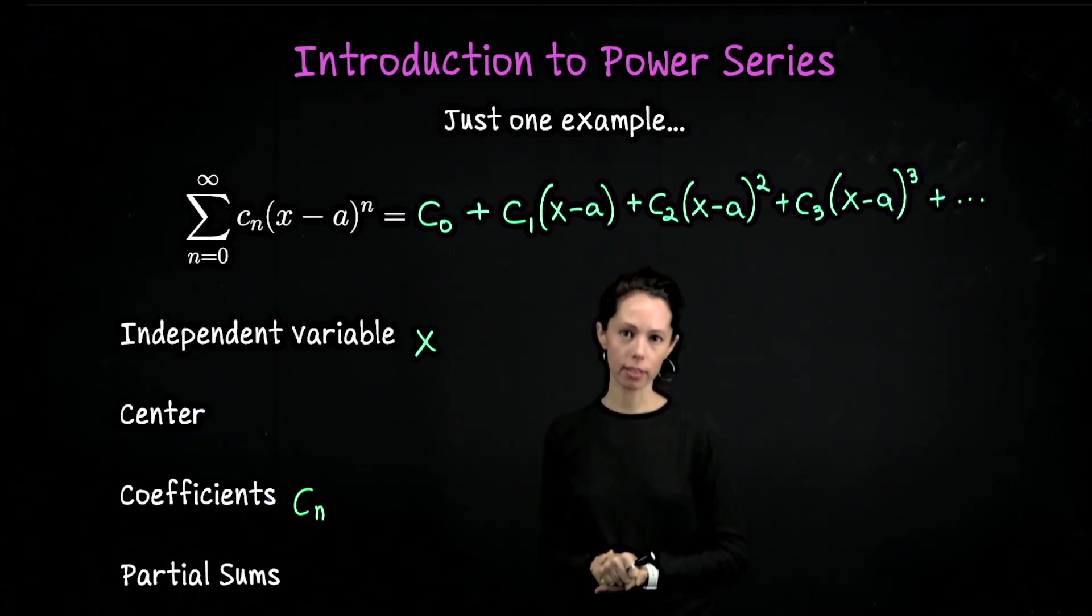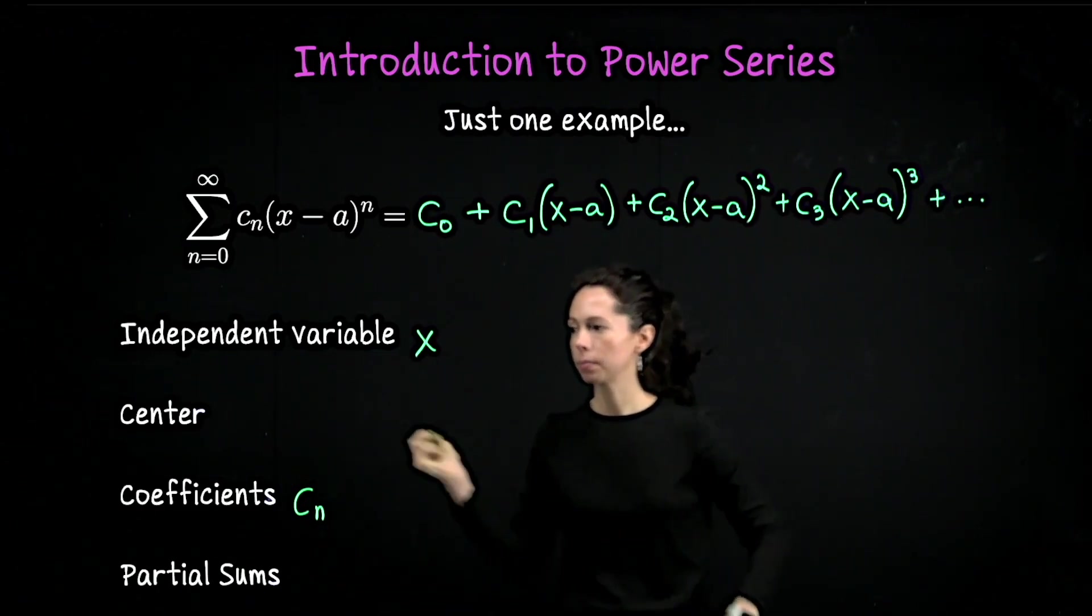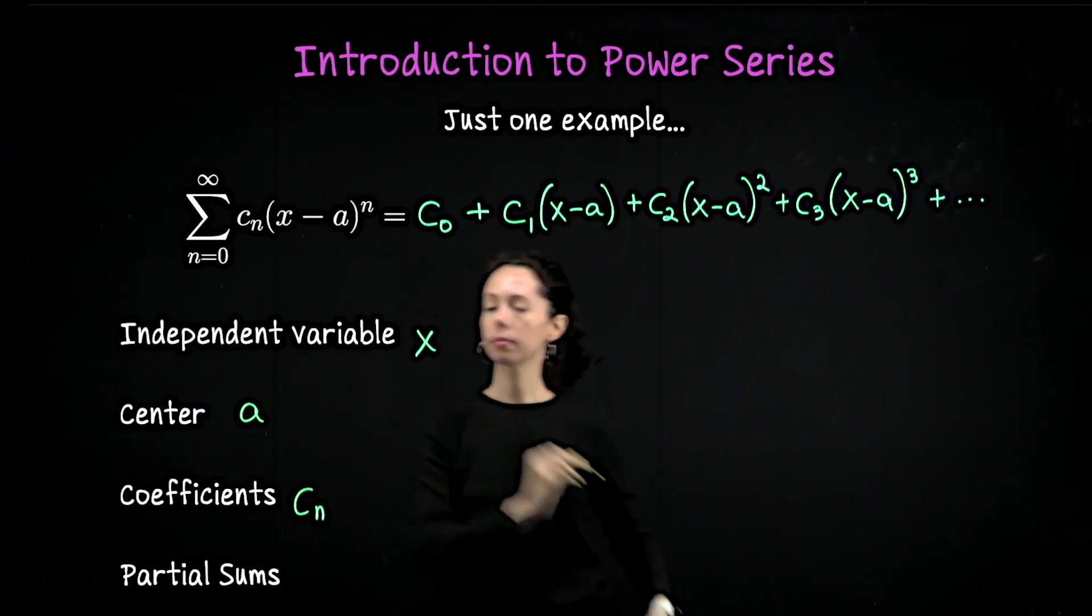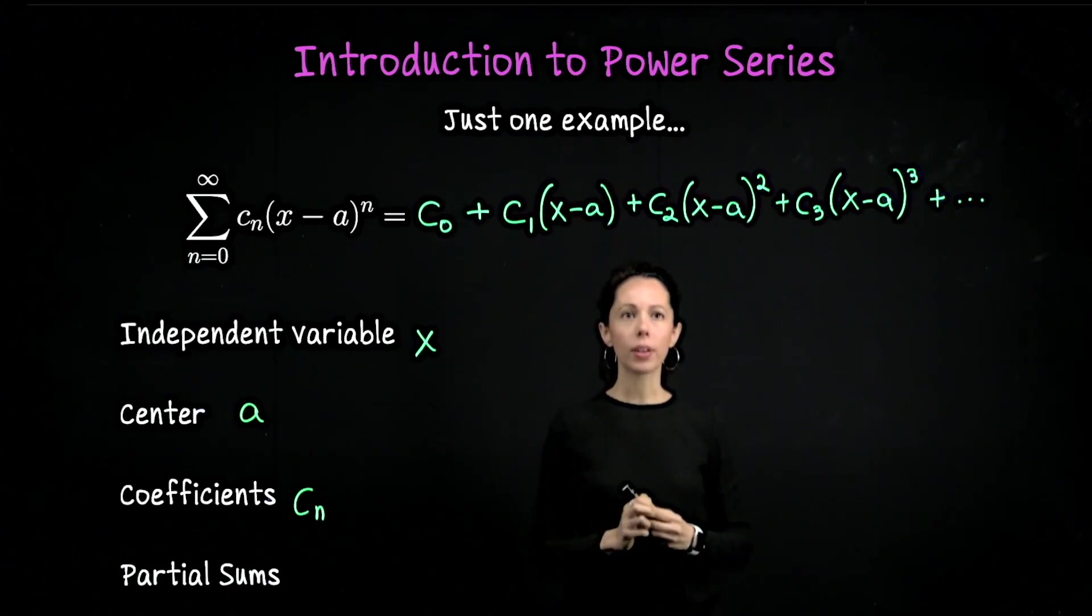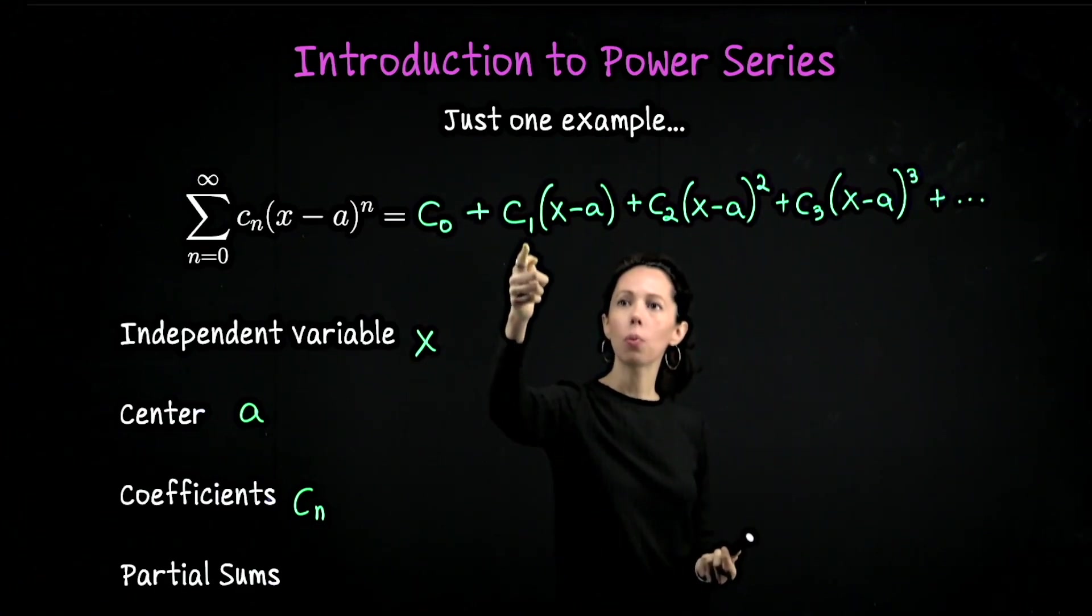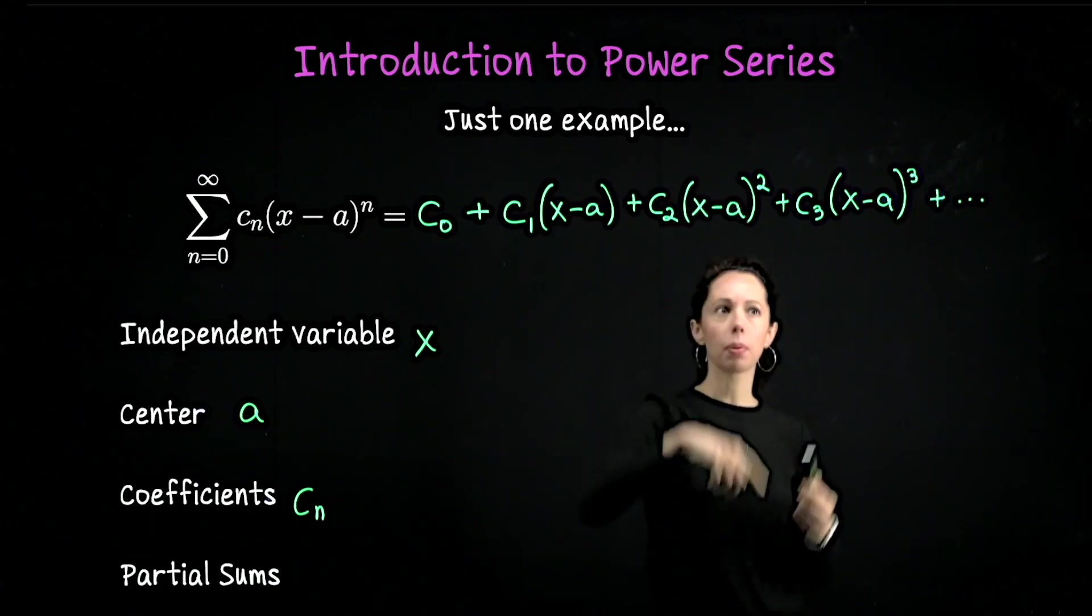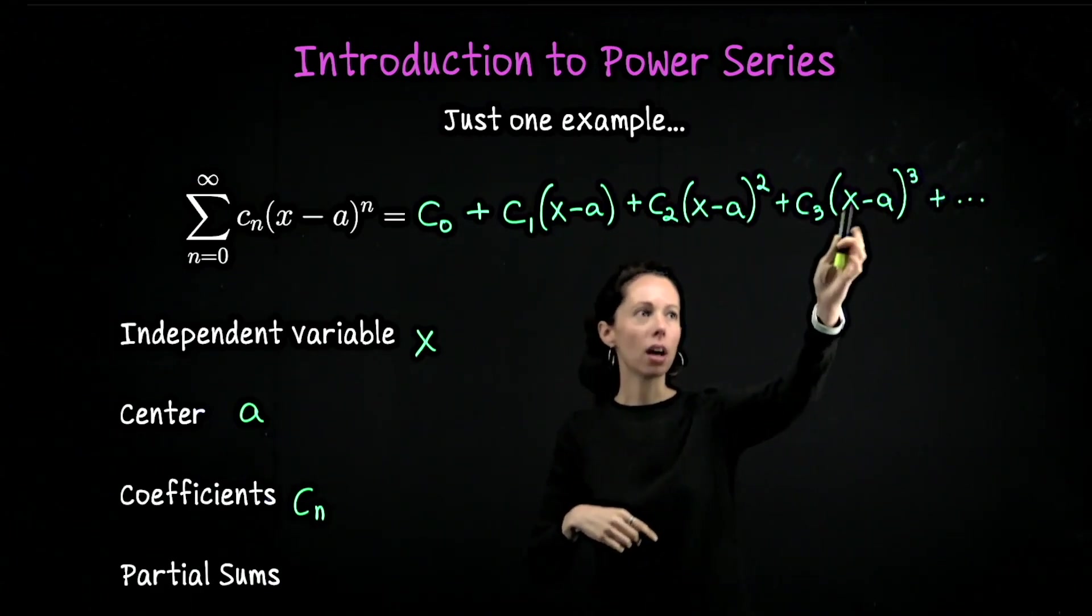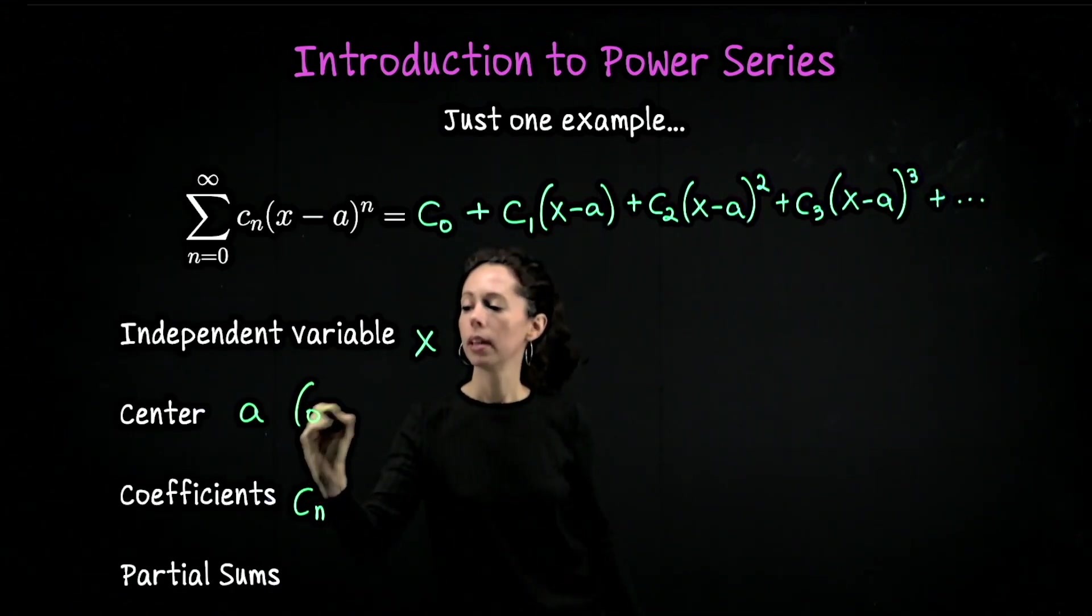This number a here is called the center. Often a is 0, so often we might look at a power series that has the form c_0 plus c_1 times x plus c_2 times x squared. Because often minus a is really minus 0. It doesn't have to be, it's just often the case.